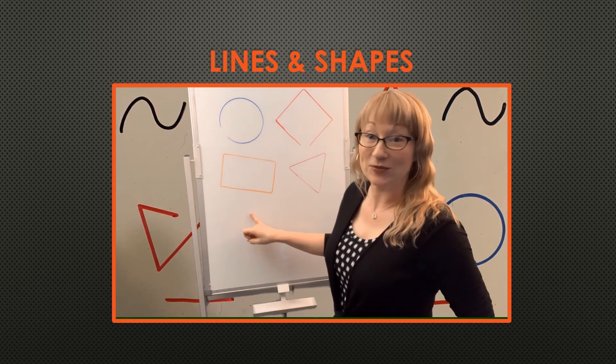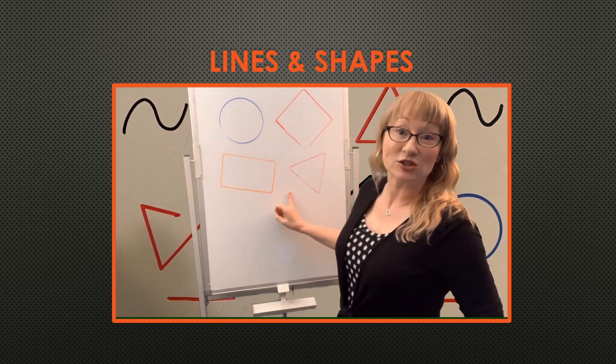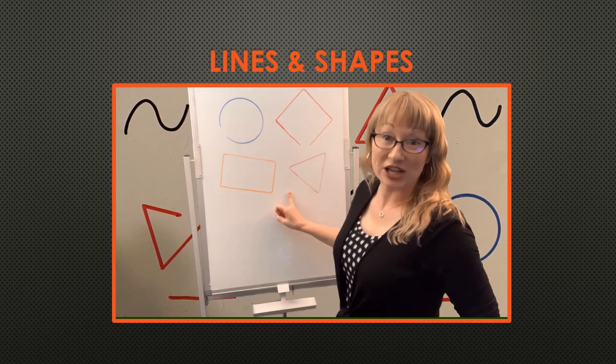That one's a rectangle. And here we have this one. All the lines are all connected. There's no spaces anywhere. This one is a triangle. It is a shape.